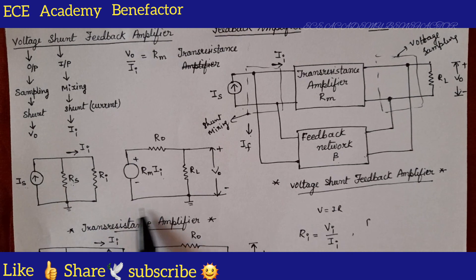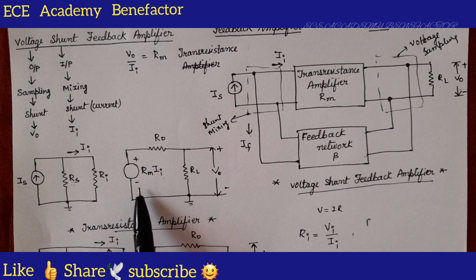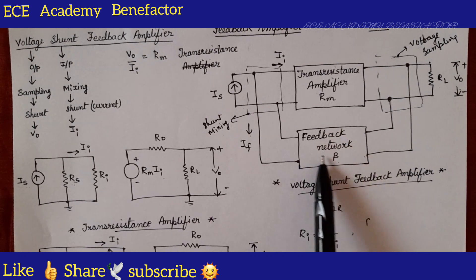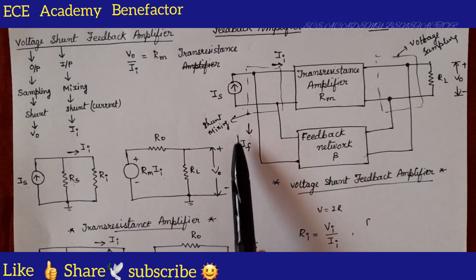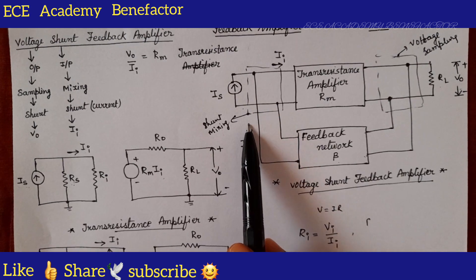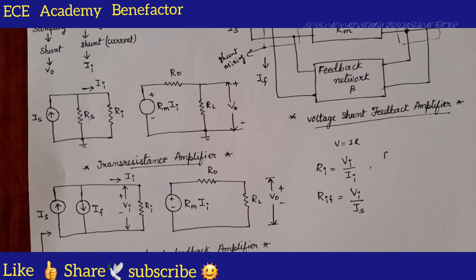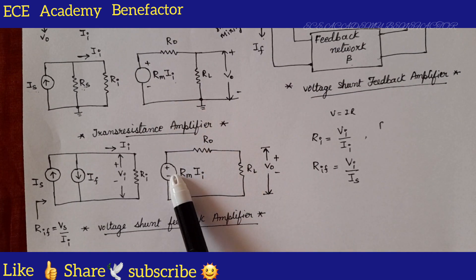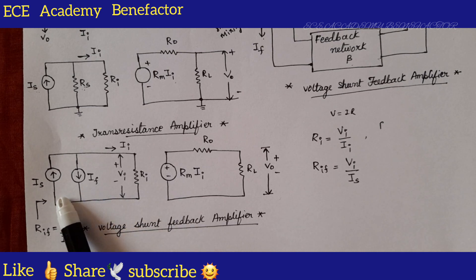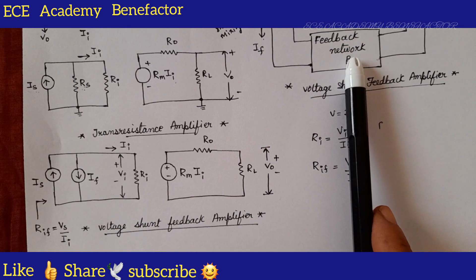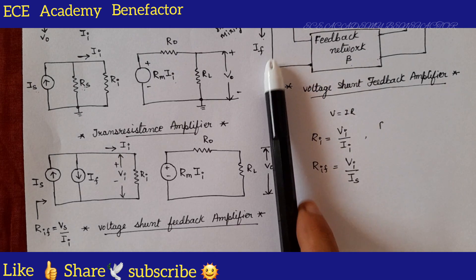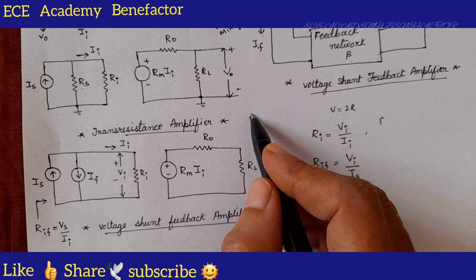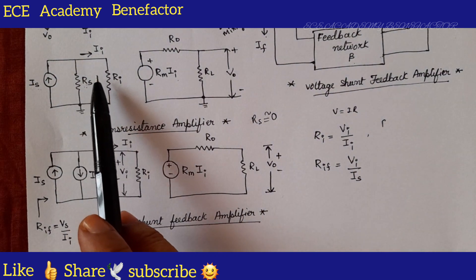Now we need to modify this equivalent circuit for the voltage shunt feedback amplifier. How does the trans-resistance amplifier become a voltage shunt feedback amplifier? By connecting a feedback network. The role of the feedback network is injecting a feedback current I-f to the input side. In this modified diagram, the difference is that we have placed a current source I-f at the input side. We have also eliminated R-s since the source resistance is negligibly small.